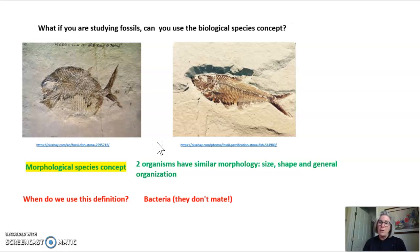We use them for bacteria. Bacteria don't mate. We also use this definition for dead organisms, preferably ones that have an intact skeleton so that you have a lot of different bones to compare. But you could use it if you only had a few bones, if they were very large, significant bones in the organism.